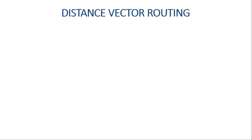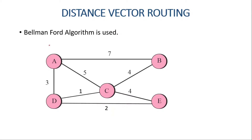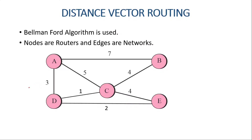Now moving on to the main topic: distance vector routing. Distance vector routing, as already mentioned, is an intra-domain routing protocol. In distance vector routing we use the Bellman-Ford algorithm. Here is a graphical representation — the nodes can be referred to as routers and the edges as networks. In the Bellman-Ford algorithm we find a source, and from that source we find the shortest path to all other nodes. Let's assume the source here is A.